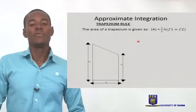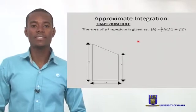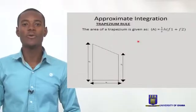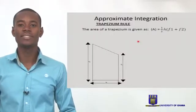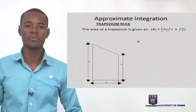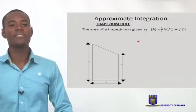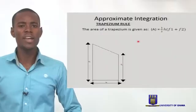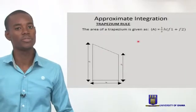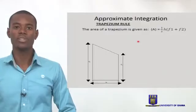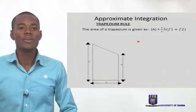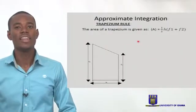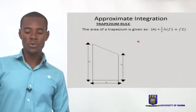Supposing we want to estimate the area under a curve, and it seems a little difficult to use the normal approach, we can actually divide the curve — or that area we are interested in — into a number of trapezoids or trapeziums, calculate the area of each trapezoid, and then put them together.